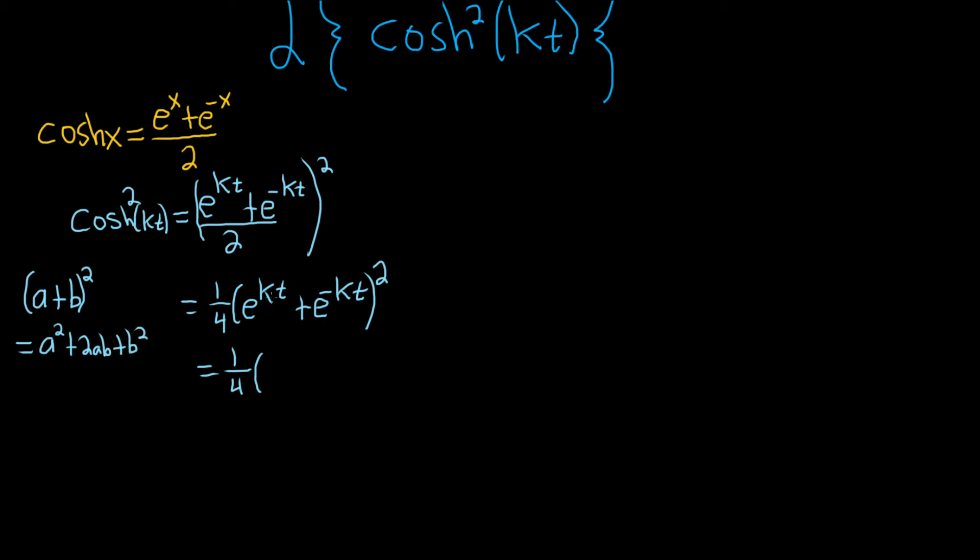So here we're going to square this exponential. So it'll be e to the kt squared, like this, plus 2ab, this is your a, this is your b, so 2 e to the kt, e to the negative kt, plus, and then you square the last one, so e to the negative kt, and then this piece here is also squared.